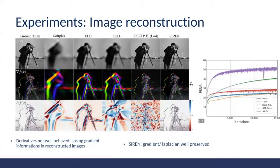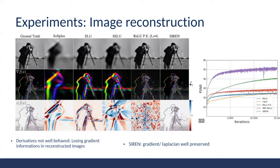Now I'll introduce some experiments. Starting with natural signals such as images, SIREN is fit supervised by the image defined on pixel coordinates, minimizing the discrepancy between phi of x and the ground truth value. A comparison is made between different nonlinearities, including ReLU with positional encoding as mentioned in the NeRF paper. Only SIREN achieves significantly better PSNR, and it also faithfully reproduces the first and second derivatives of the image — all other activations failed for the Laplacian.